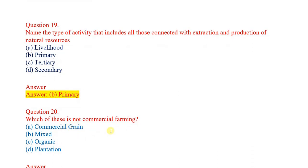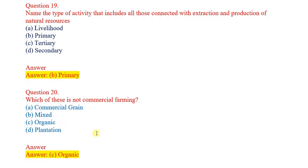Question number 20: Which of these is not commercial farming? Options: commercial grain, mixed, organic, plantation. Correct answer: organic.